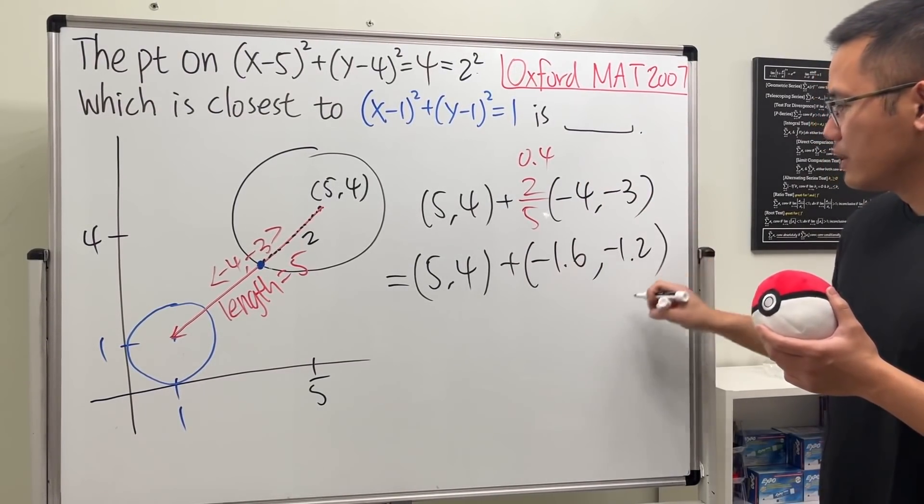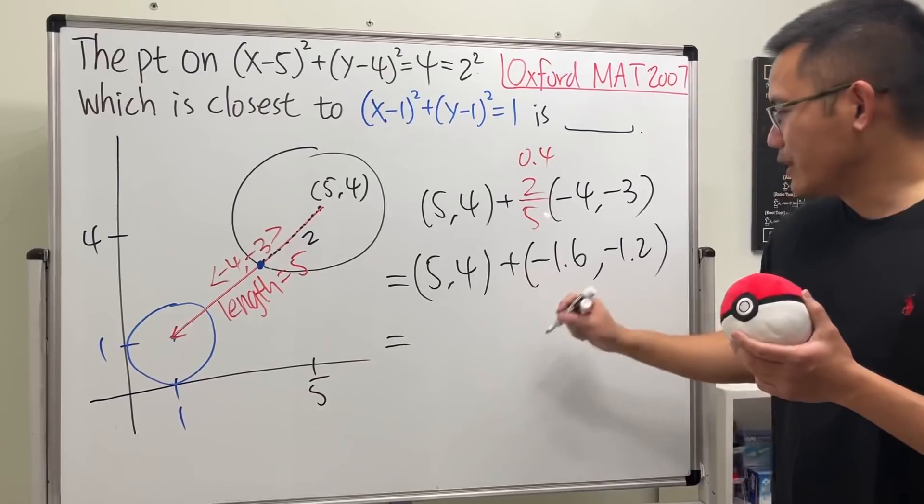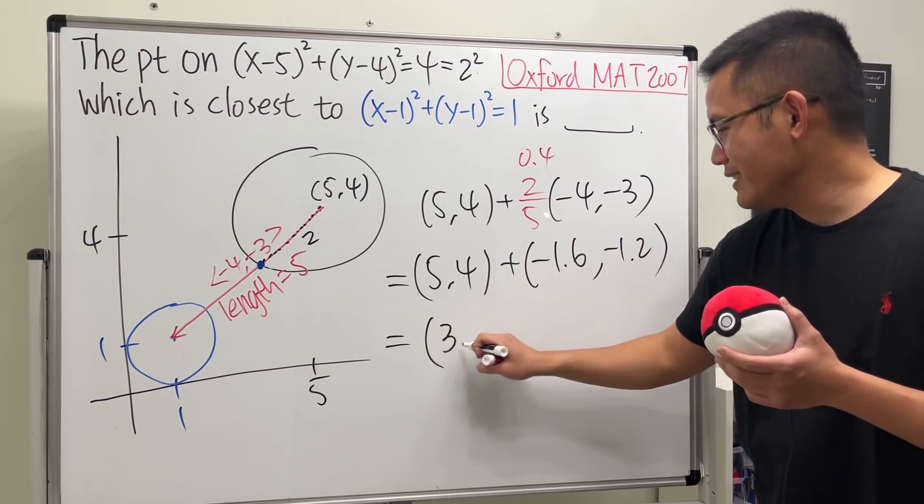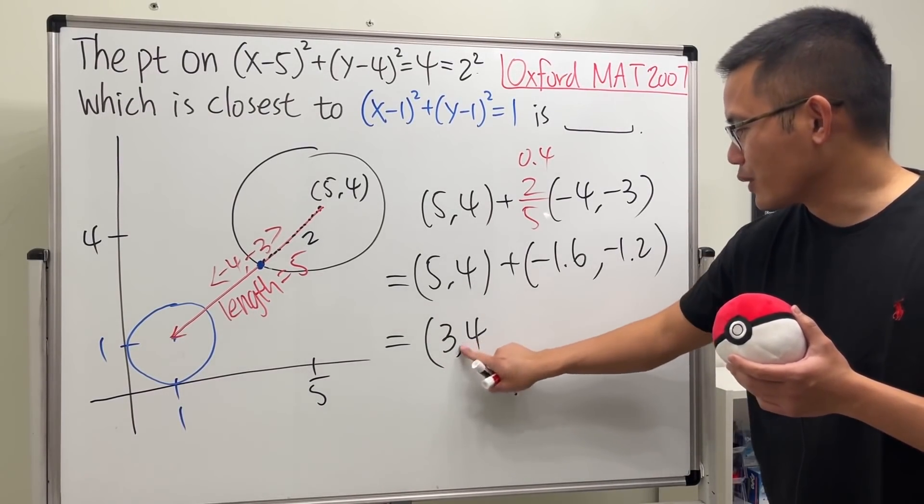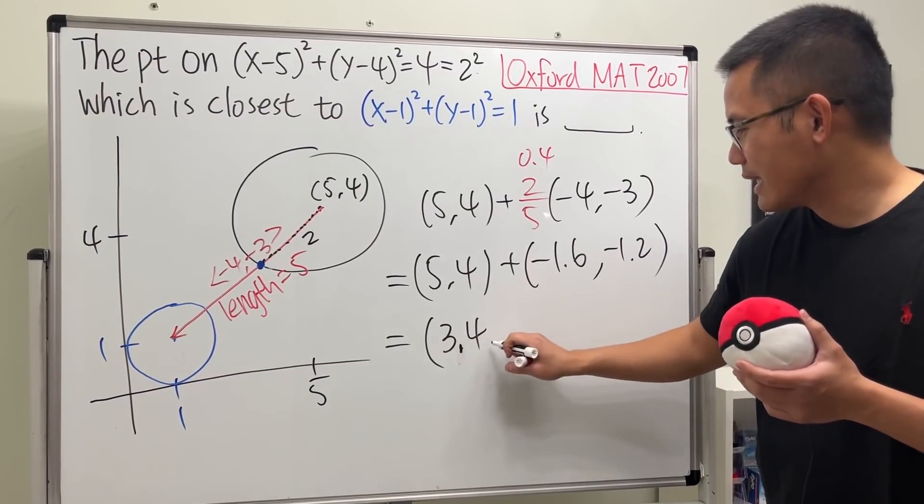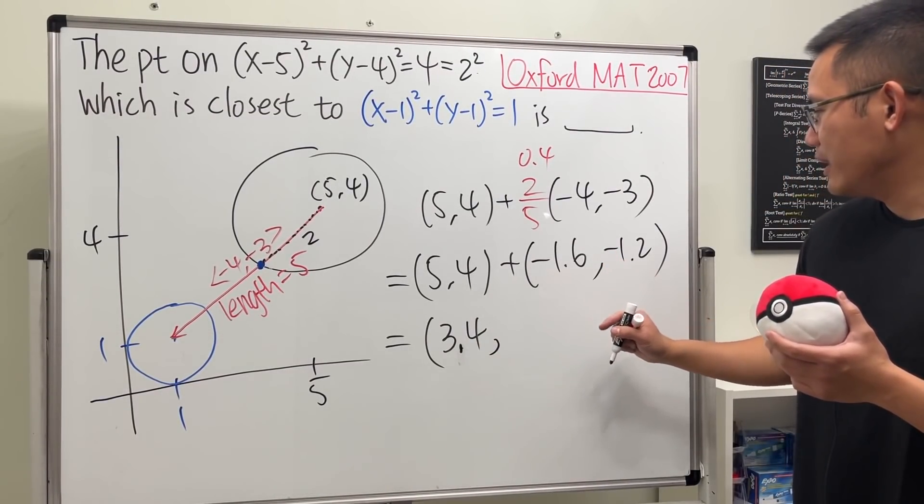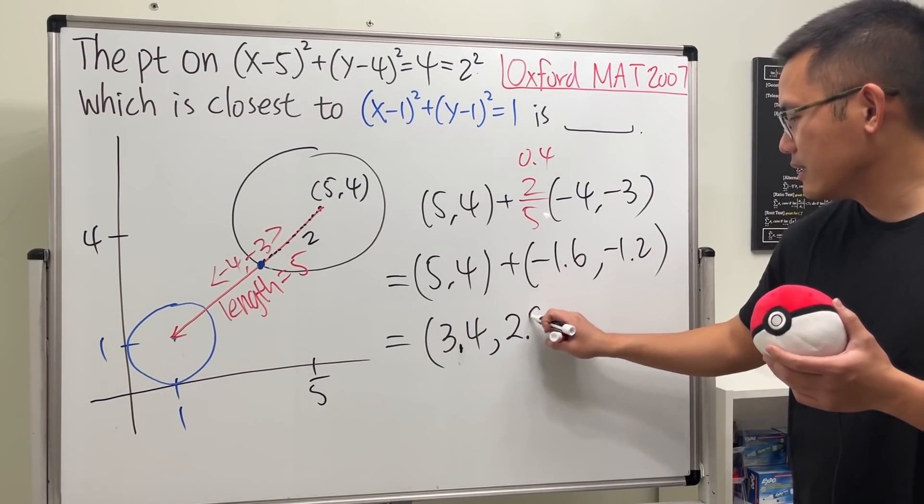And just go ahead and do it, so we get 3.4 comma—and we get 2.8. Let me check my arithmetic. I think that's correct. So this right here will actually give you that point.